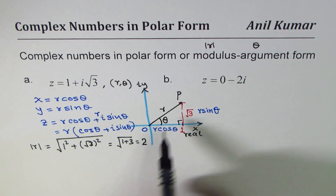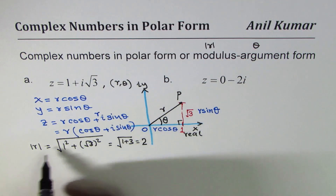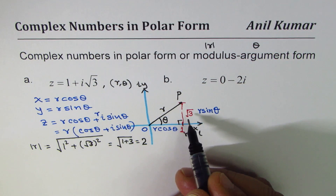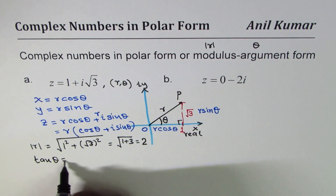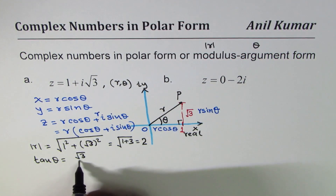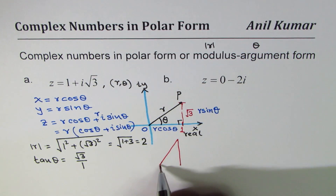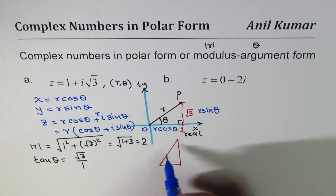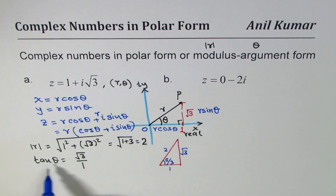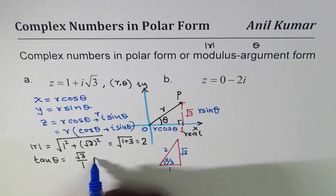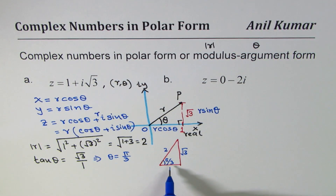Now we need to find theta. We use the ratio: tanθ = √3 / 1. Using special triangles — the 1, 2, √3 triangle — for the angle π/3, where tan is opposite over adjacent, we get θ = π/3.